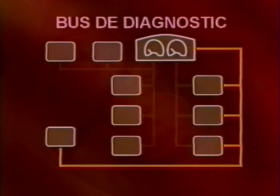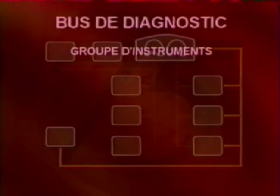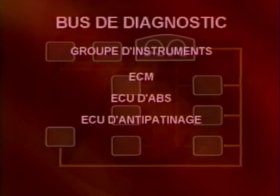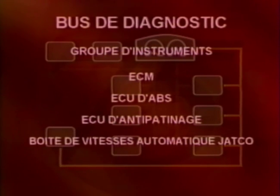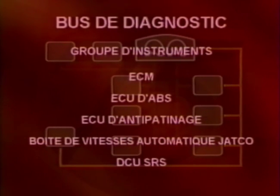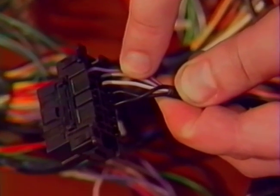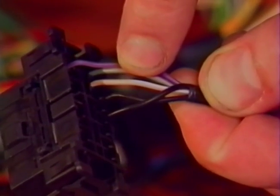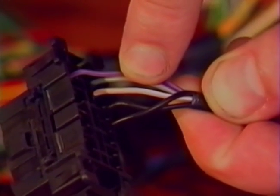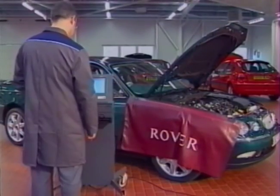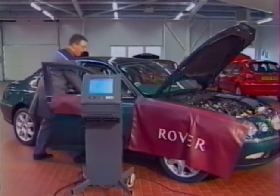Un troisième bus est connu sous le nom de bus de diagnostic. Ce bus est connecté directement au groupe d'instruments, à l'ECU de gestion moteur, à l'ECU d'ABS, à l'ECU d'anti-patinage si le véhicule en est équipé, à l'ECU JATCO pour les véhicules automatiques, ainsi qu'au module de commande SRS. La ligne de diagnostic permet au test-book de communiquer avec chacun de ces systèmes. Le test-book peut également accéder aux autres ECU du véhicule en passant par le groupe d'instruments. La ligne de diagnostic n'utilise qu'un seul fil rose et blanc pour transmettre 10 400 digits binaires par seconde, et est reliée au test-book via l'adaptateur rouge branché à la prise diagnostic située au-dessus des pieds du conducteur.